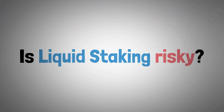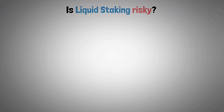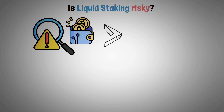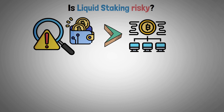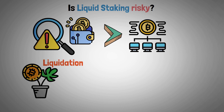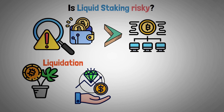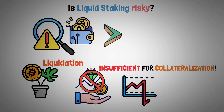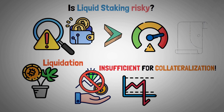But at the end, is liquid staking risky? There will always be risks associated with cryptocurrency, just like with any other type of financial protocol. For example, liquidation is a possibility in yield farming. The asset value might become insufficient for collateralization if the market takes a hit. Liquid staking also carries a significant risk related to smart contract security.